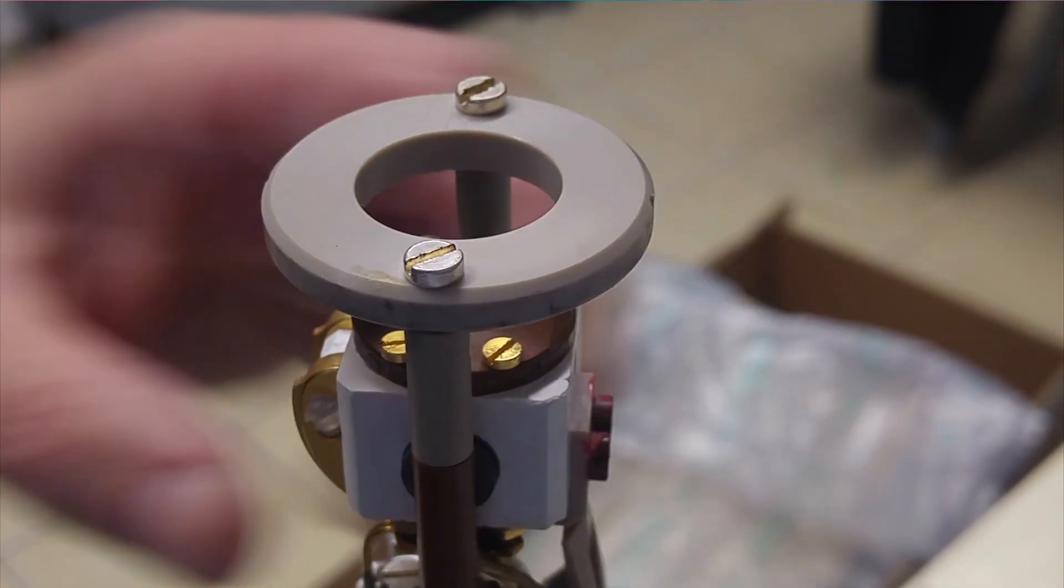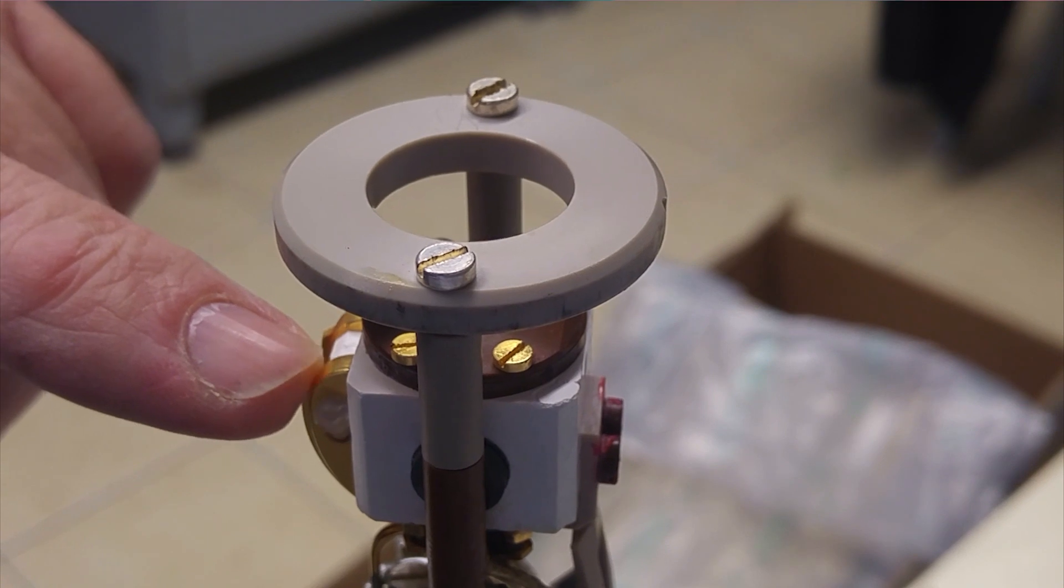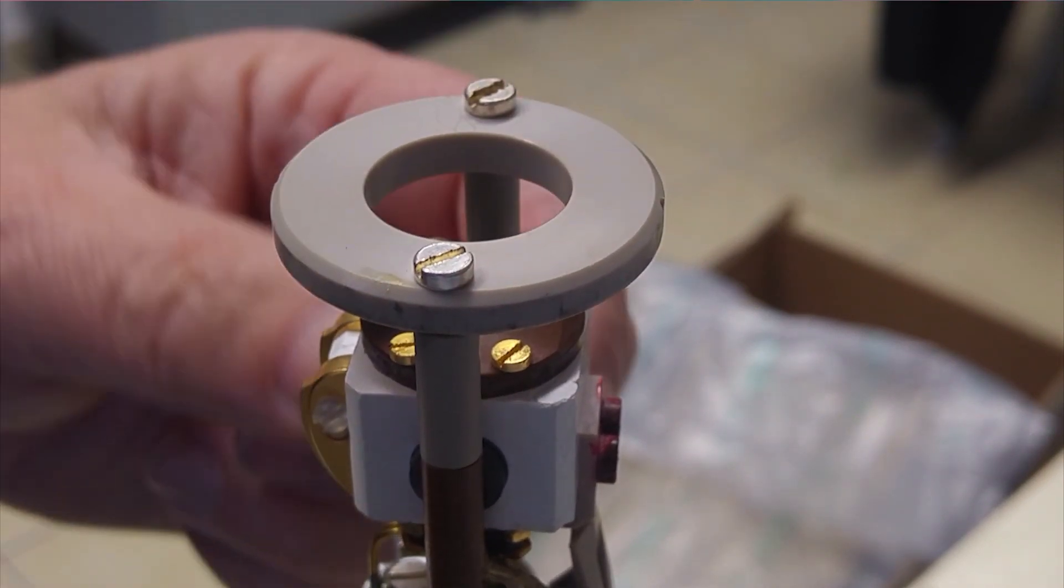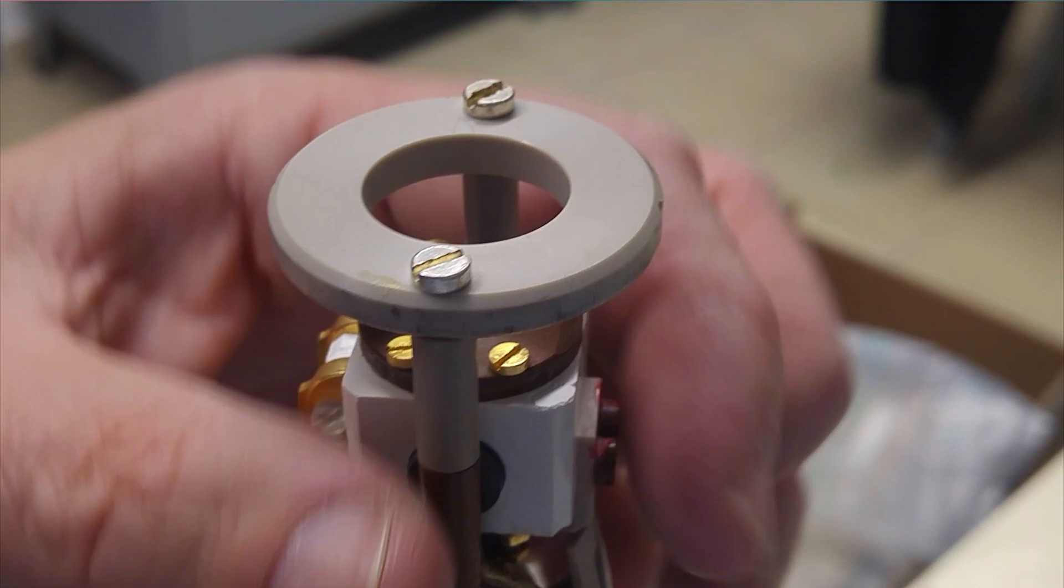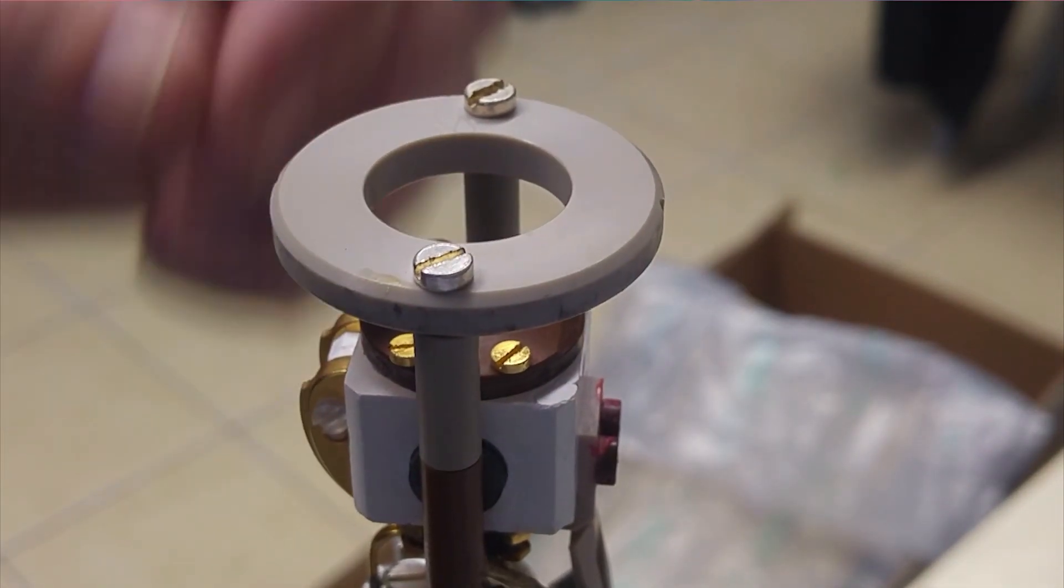So this here is the stator with the coil in it here. What we're going to do is take these two screws off, and then we can detach this section and pull this free.